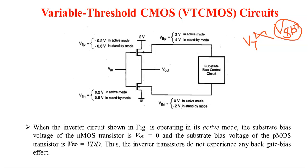In this circuit, the inverter is connected to the substrate bias control. The supply voltage of the inverter is a low supply voltage, VDD equal to 2V. The substrate of both NMOS and PMOS is connected to the substrate bias control circuit. This substrate bias control circuit is used to change the corresponding substrate voltage VSB. Based on that, the threshold voltage of both NMOS and PMOS will be changed, reducing subthreshold leakage and standby power dissipation. We are using a variable substrate bias voltage, which is why it is called the variable threshold CMOS circuit.